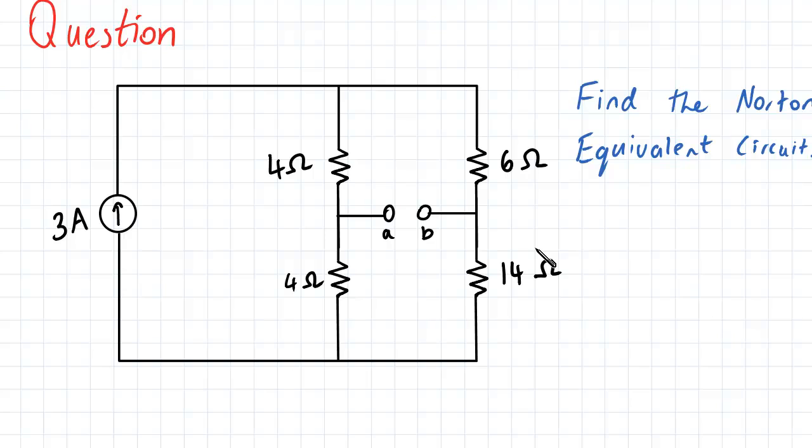And the terminal pair that is supplied for this question, through which we find the Norton equivalent, is A and B over here, where A is connected to these 4 ohm resistors and B is connected to the 6 ohm and 14 ohm resistor.